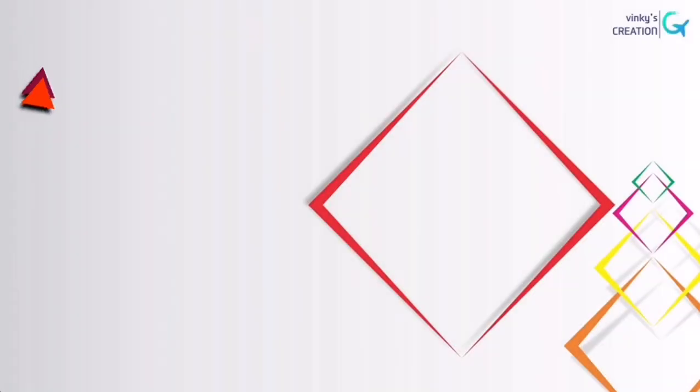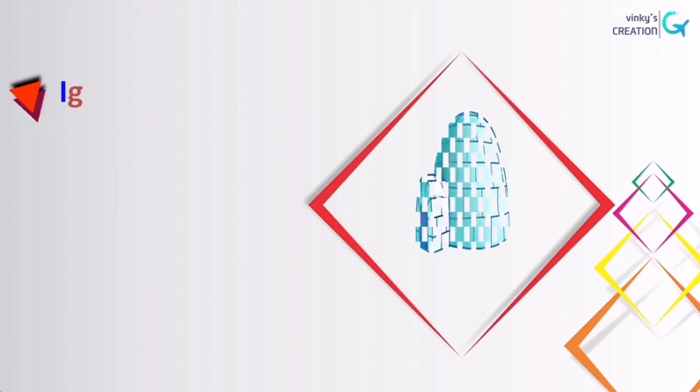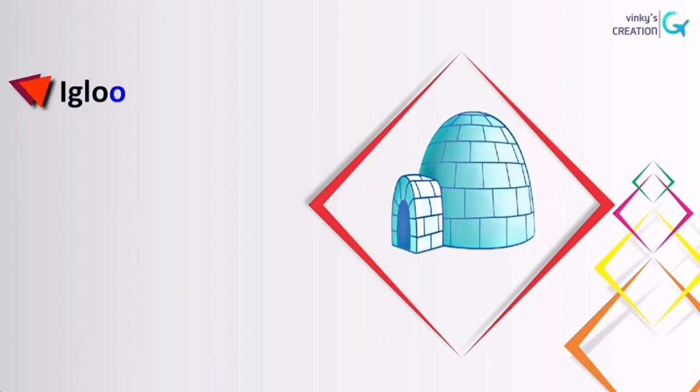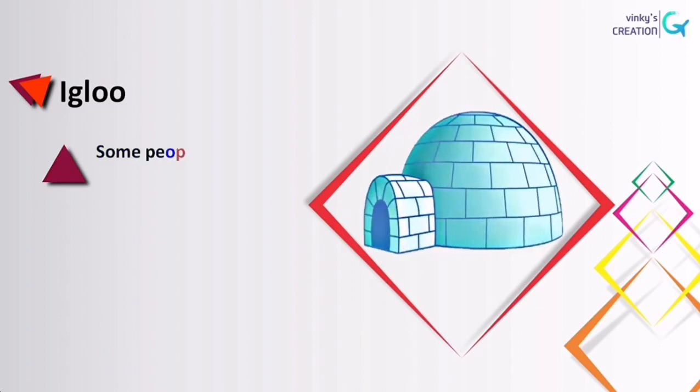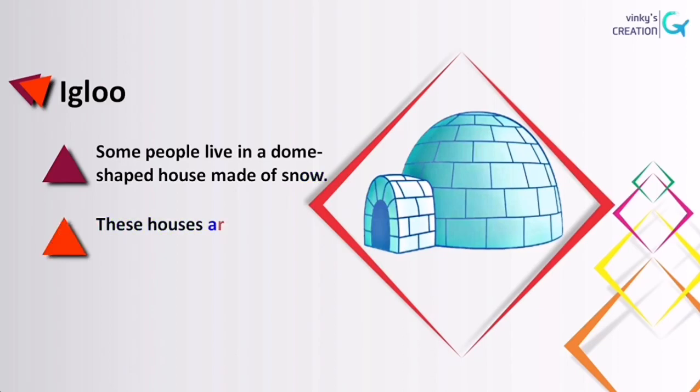Our next type of house is igloo. Do you ever seen igloo? Some people live in a dome-shaped house made up of snow. These houses are made by Eskimos with solid ice cubes in semicircular shape.